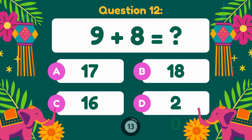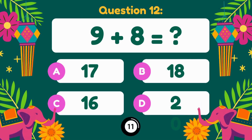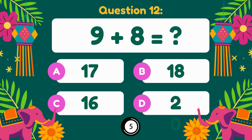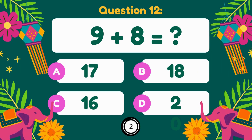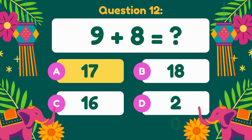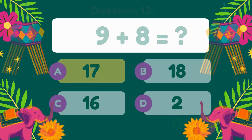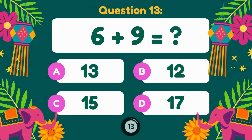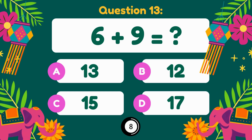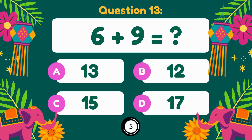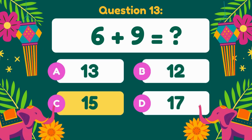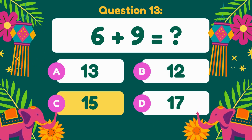9 plus 8 equals. 9 plus 8 is equal to 17. 6 plus 9 equals. 6 plus 9 is equal to 15.